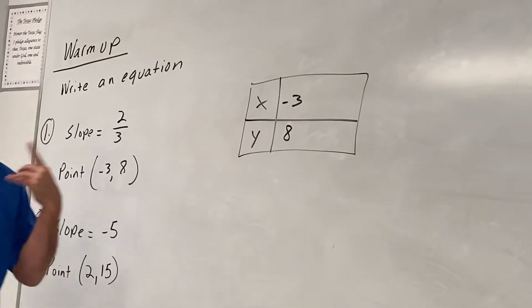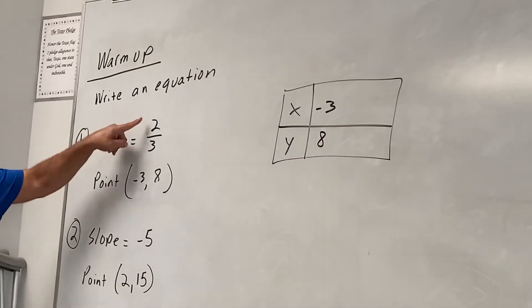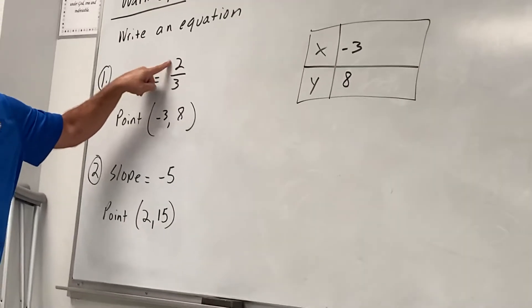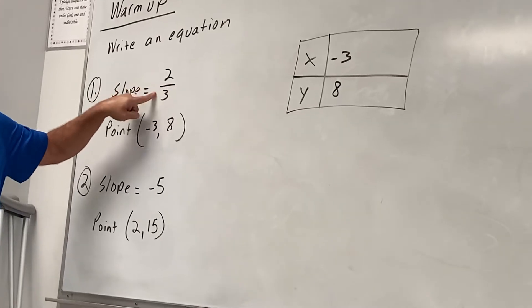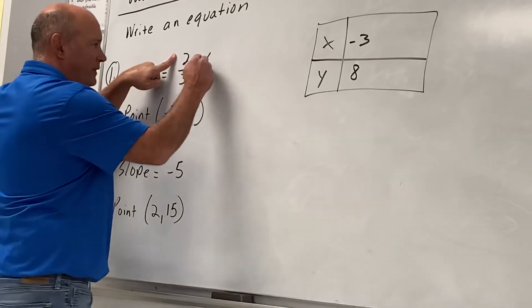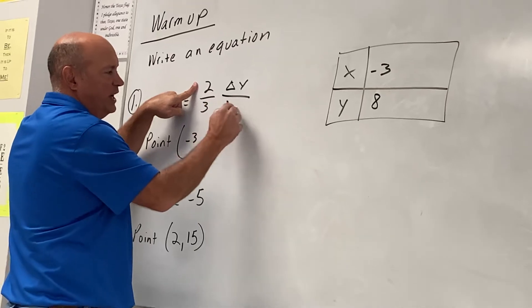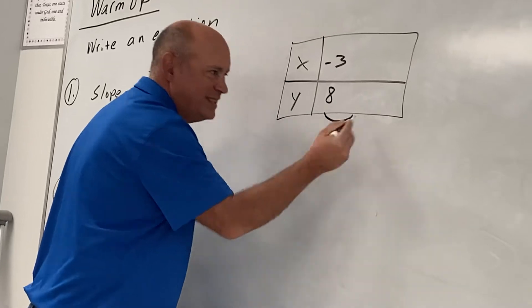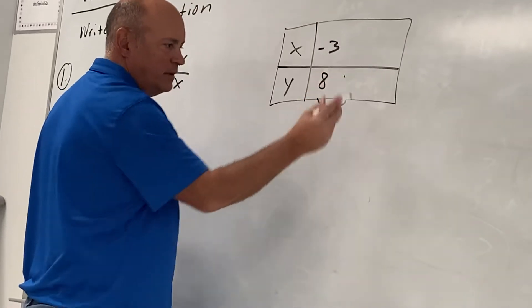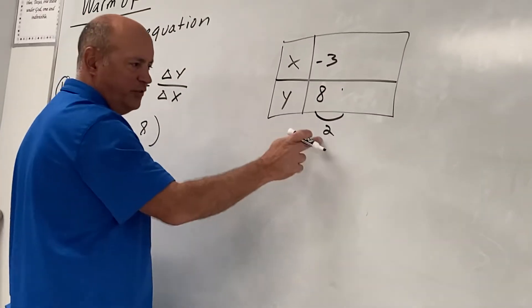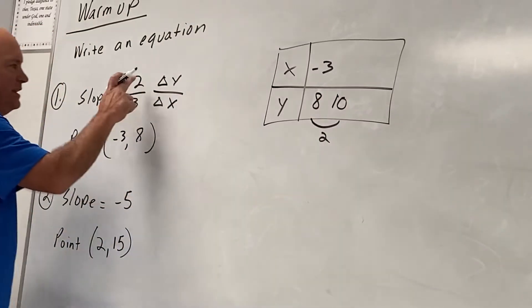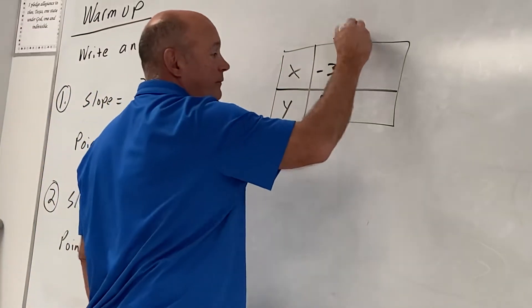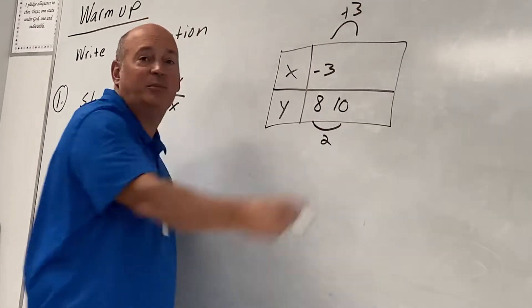All right, now I don't know what the next point is, but I do because don't they tell me the slope? Yes. Which one is going up by 2? The y's or the x's? The slope is the change in y over the change in x. The y's are going up by 2. What's the next number? 8 plus 2. The x's are going up by 3.